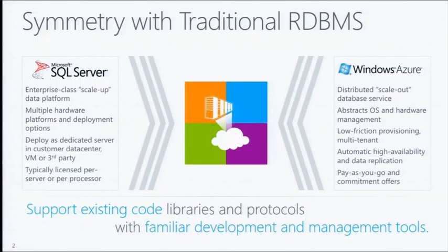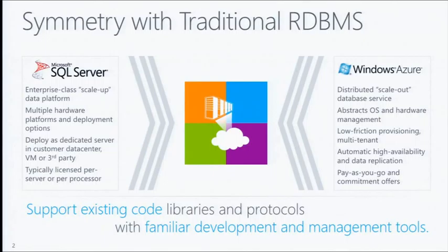One really important point about Windows Azure SQL Database is that every database you create has automatic high availability built in. This means every database has multiple online hot replicas. So if any physical node in a data center goes down, you never lose your database connectivity from your application. High availability is built into the system for every database you create, and we don't charge extra for that. Pricing is based on the size of the database you're using — pay-as-you-go and commitment offers ranging from 100 megabytes all the way up to 150 gigabytes.